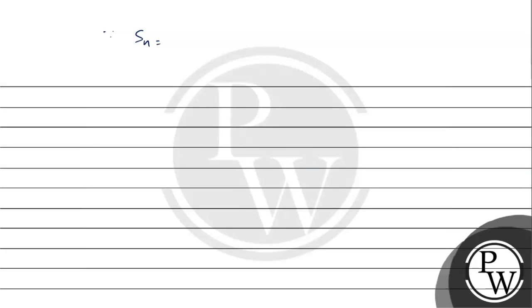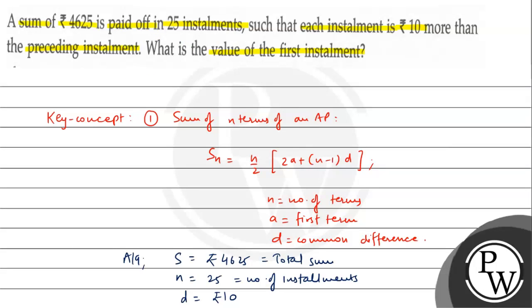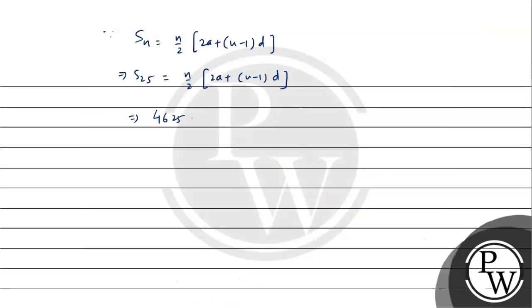Since Sn = (n/2) × [2a + (n-1)d], we have S25 = 4,625. So 4,625 = (25/2) × [2a + (25-1) × 10], which gives us 4,625 = (25/2) × [2a + 240].